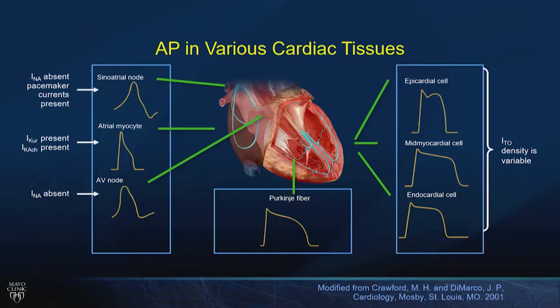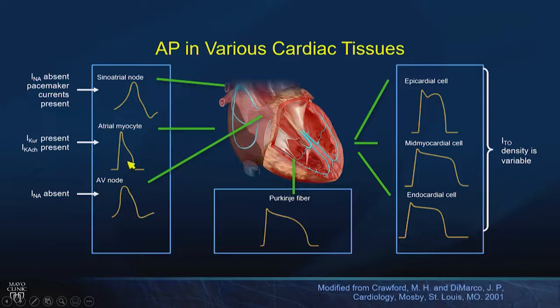That was a generic action potential, but there's variation based on cell type within the heart. Nodal tissue — the AV node or SA node — does not have the same concentration of sodium channels, so phase 0 is relatively blunt. As a result, sodium channel blockers don't affect nodal tissue. The atrial myocyte has a particularly short action potential because of the IK-ACH channel, which is why the atria are so prone to arrhythmias. The Purkinje fiber has a longer action potential duration to prevent reentry into Purkinje tissue.